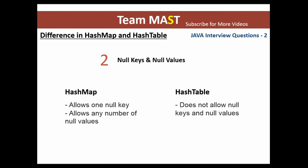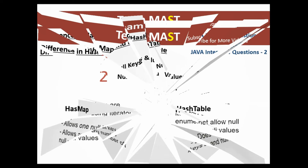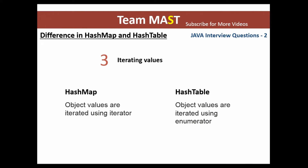The next difference is regarding null keys and null values. In a HashMap, only one null key is allowed, but you can store any number of null values. However, in a Hashtable, no null keys are allowed and no null values can be stored.